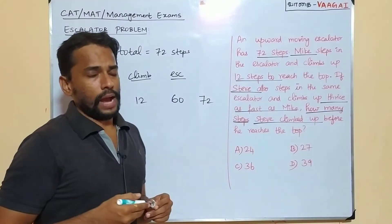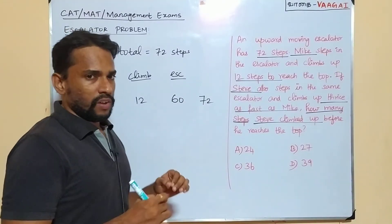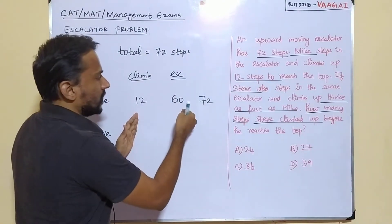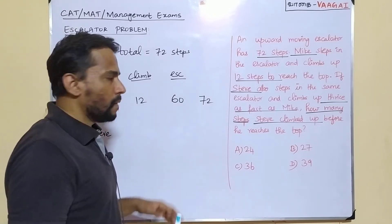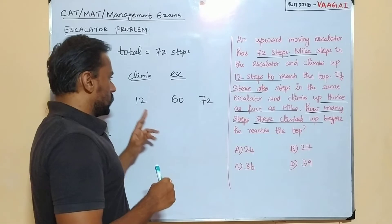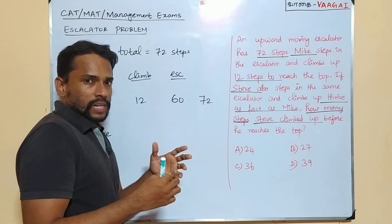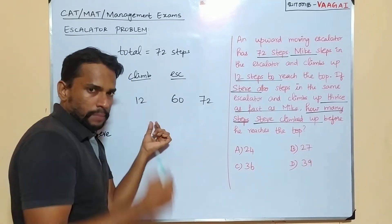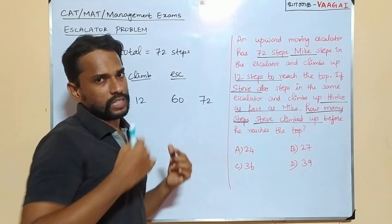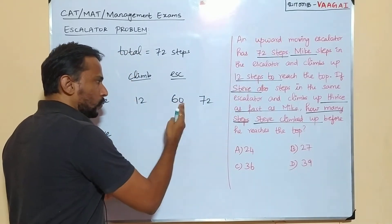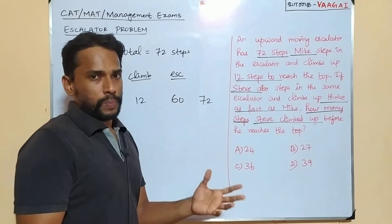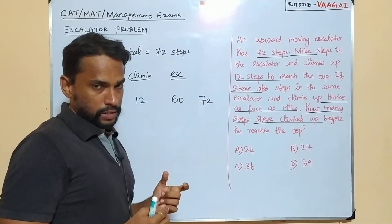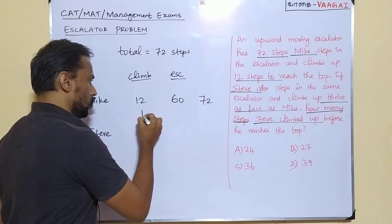We note it down. And yes, now with this itself, you can easily get the ratio between Mike's speed and the escalator speed. Mike's speed and escalator speed. Just take the ratio because both are in terms of steps only and the same time only, because the time taken by Mike to climb this 12 steps is same as the time taken for the escalator to take 60 steps. So in that case, this will give you the ratio of the speeds, which means Mike's speed and escalator speed. Just take the ratio 12 is to 60. That will be nothing but 1 is to 5. Just take the ratio 1 is to 5.